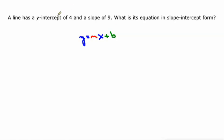So in this case, what are we given? That the y-intercept is four and a slope of nine. So our equation will be y equals, just replace m with the slope, which is nine times x plus our y-intercept.